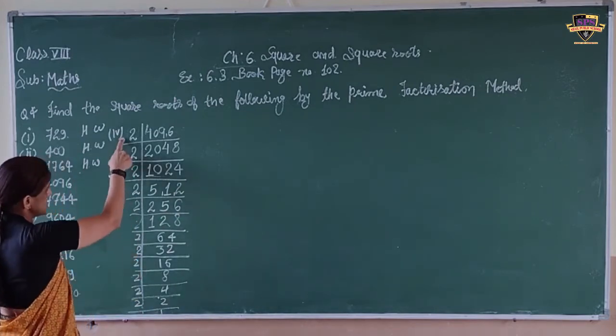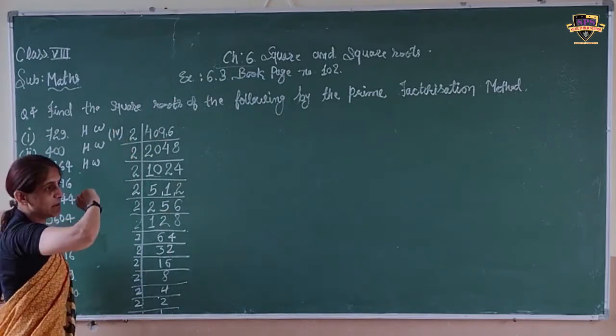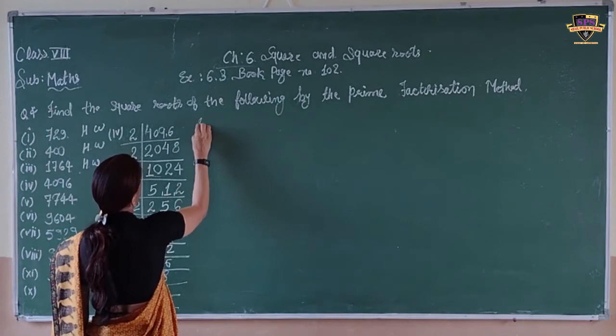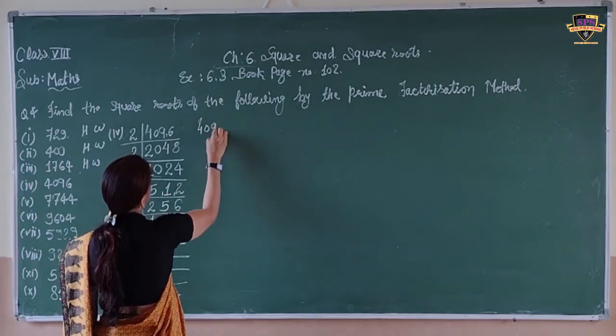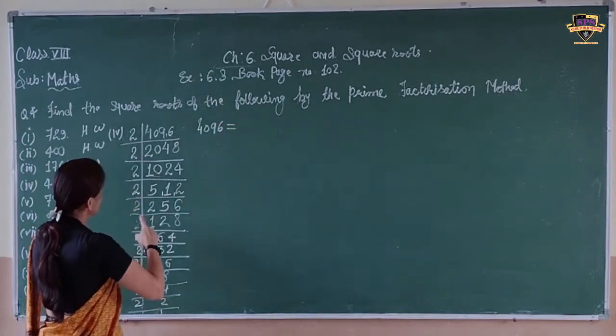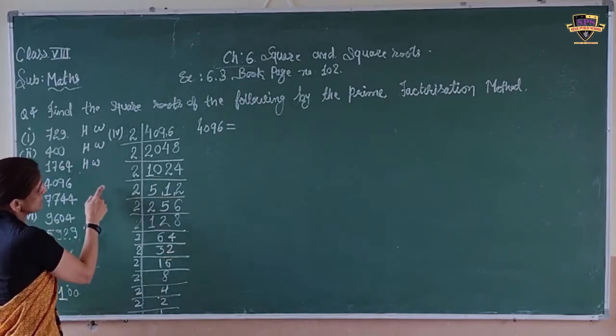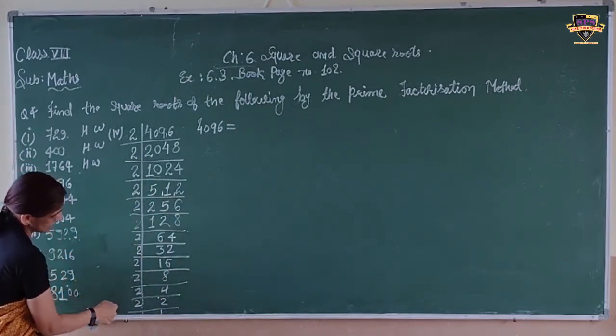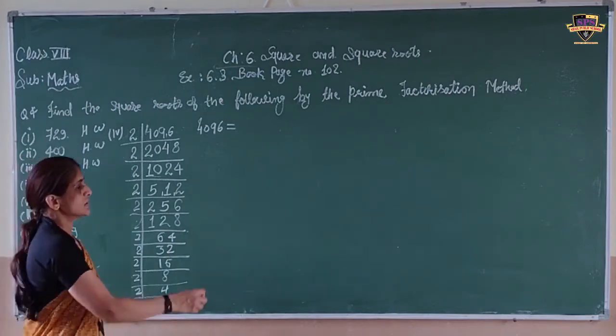Now, find out the factorization. For square roots, we write here 4096. How many 2s? 1, 2, 3, 4, 5, 6, 7, 8, 9, 10, 11, 12. Twelve 2s.